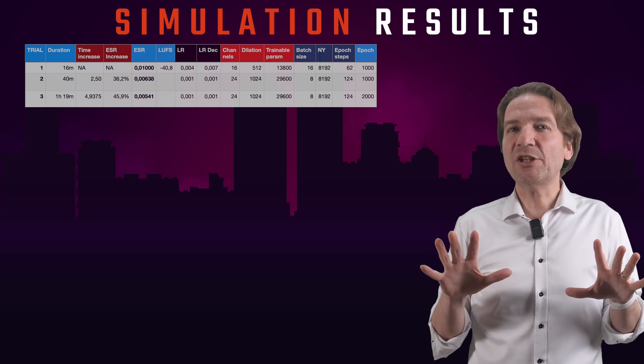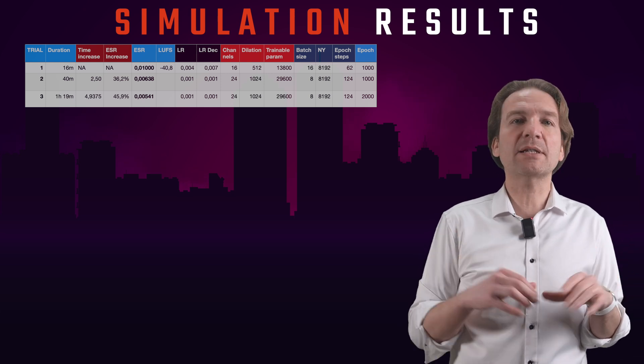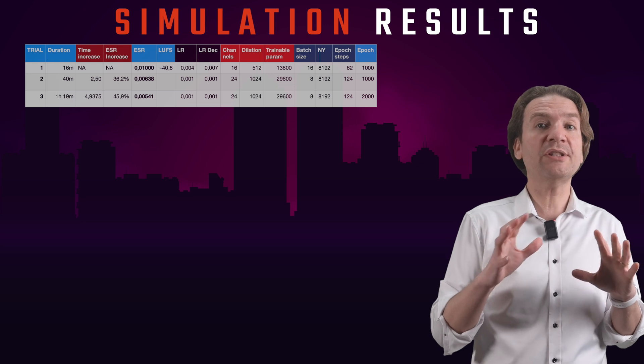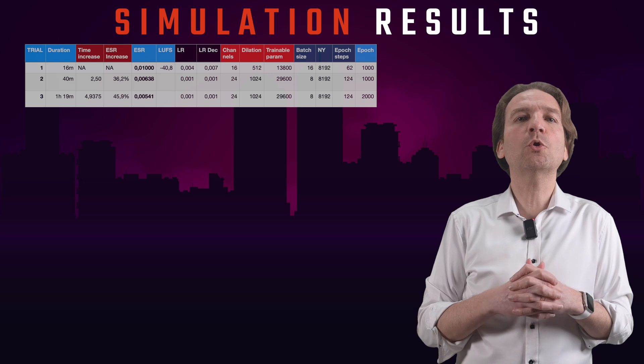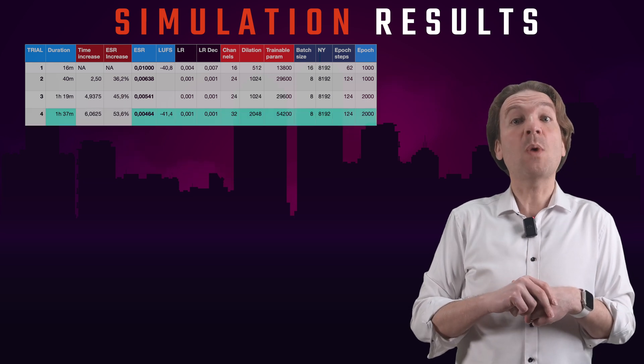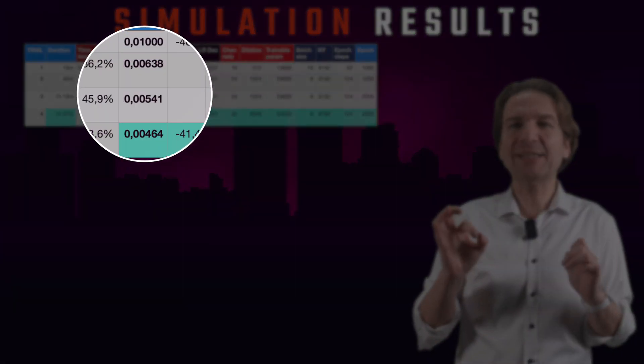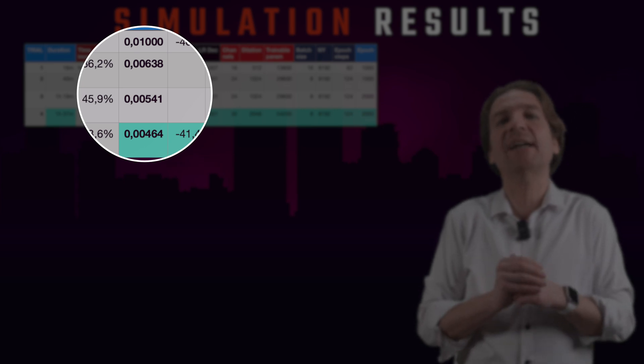And now let's increase the dilation and the channels even further, setting them to 2048 and 32, with our trial number 4, still training for 2000 epochs. Well, I reached 0.00464 ESR.